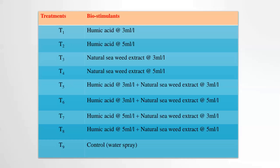The treatment details include nine treatments. One treatment is the control, and the remaining eight use biostimulants. T1 and T2 use humic acid at concentrations of 3 ml per liter and 5 ml per liter, respectively.